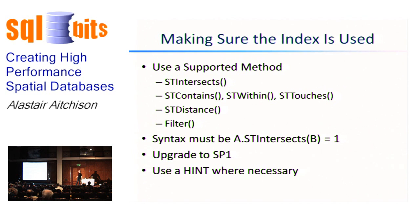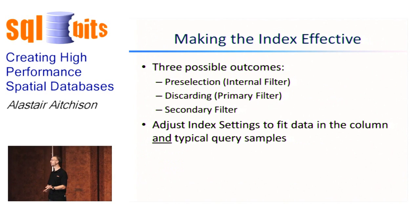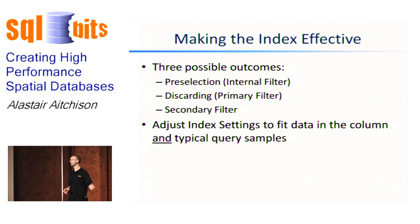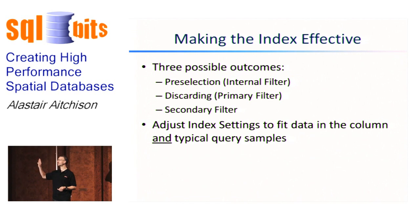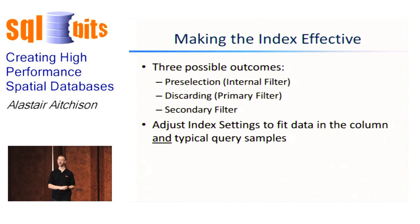Once you've made sure your index is being used, you need to make sure the index is effective. Remember there are three possible outcomes: the internal filter — we know this row can be included in the results; discarding it — we know this row definitely isn't in the results. Both of those are good things. The secondary filter, where we're not really sure and have to run additional checking — that's what's going to slow your queries down.